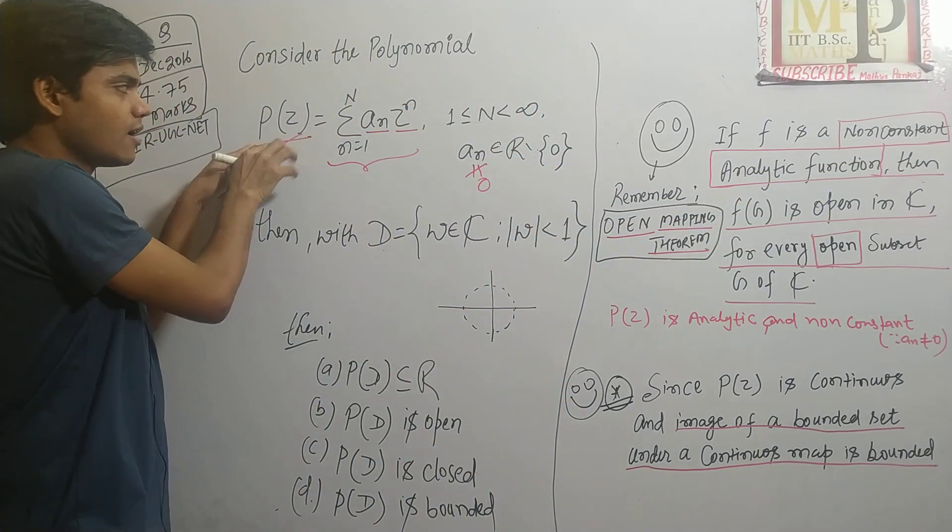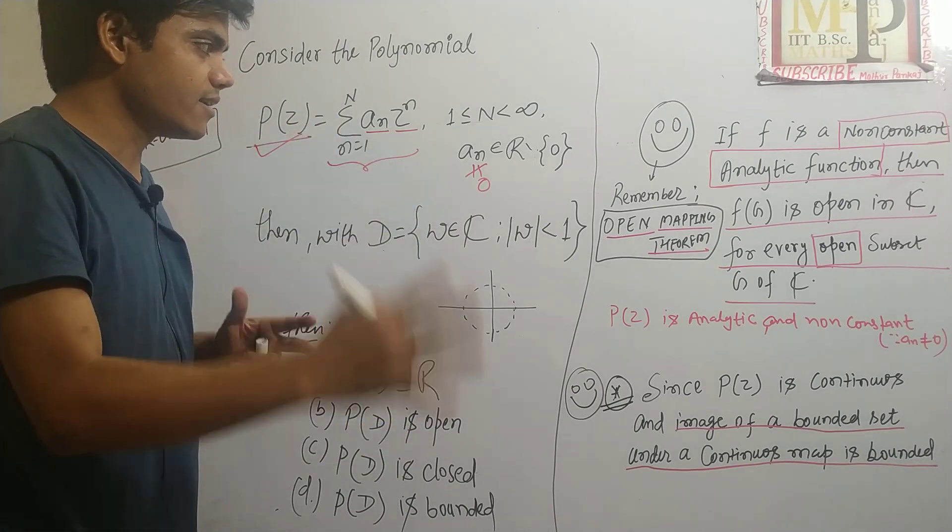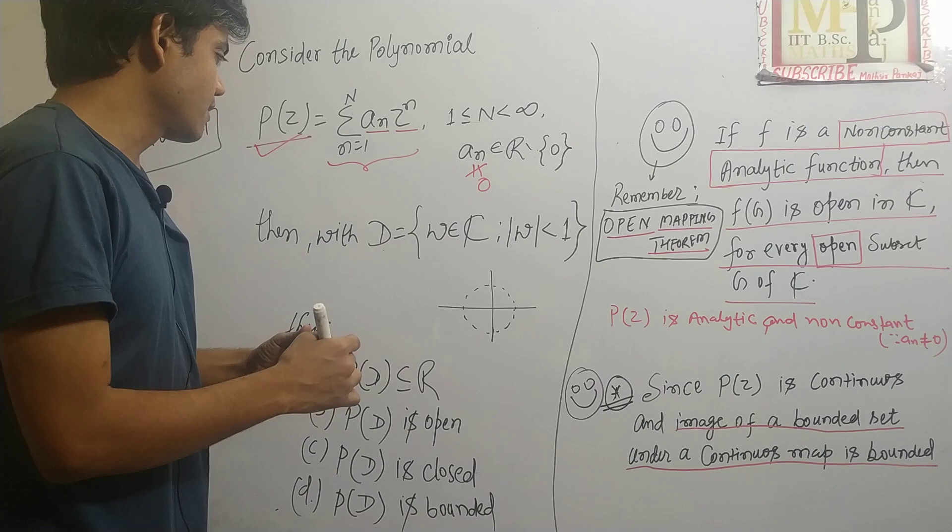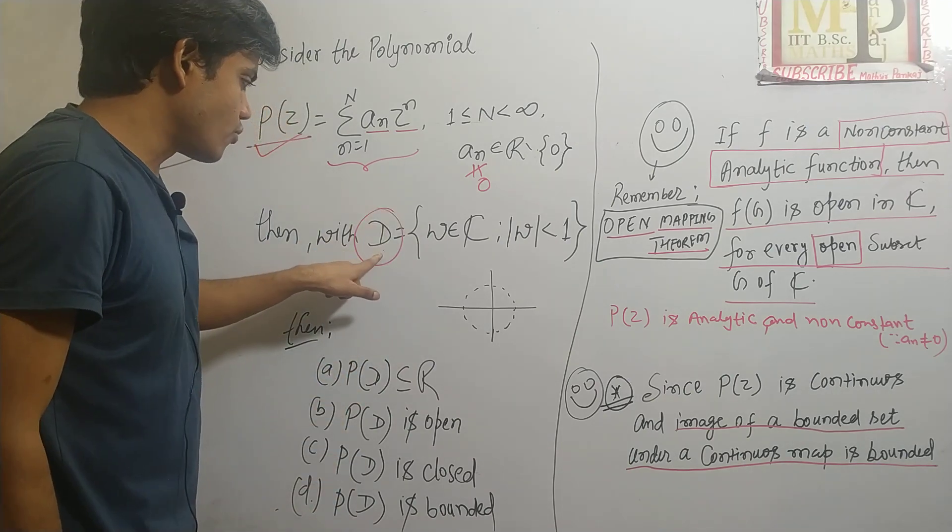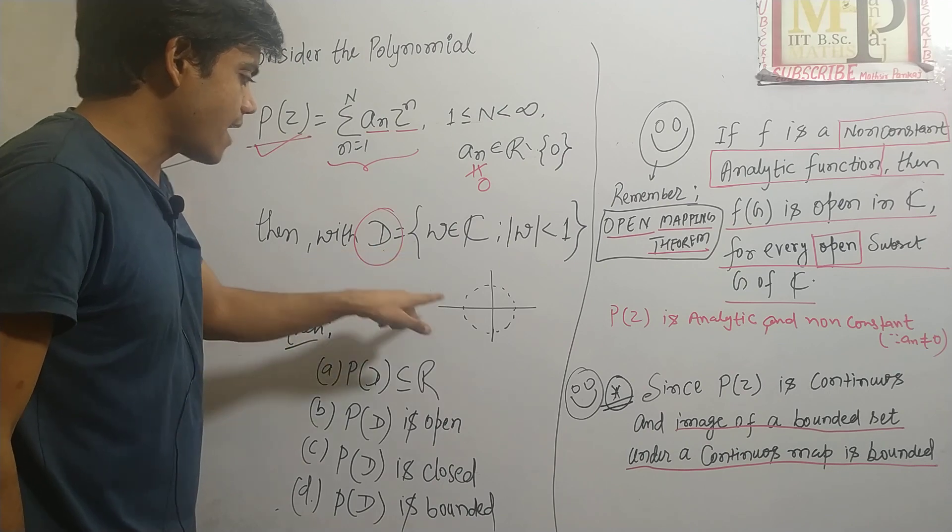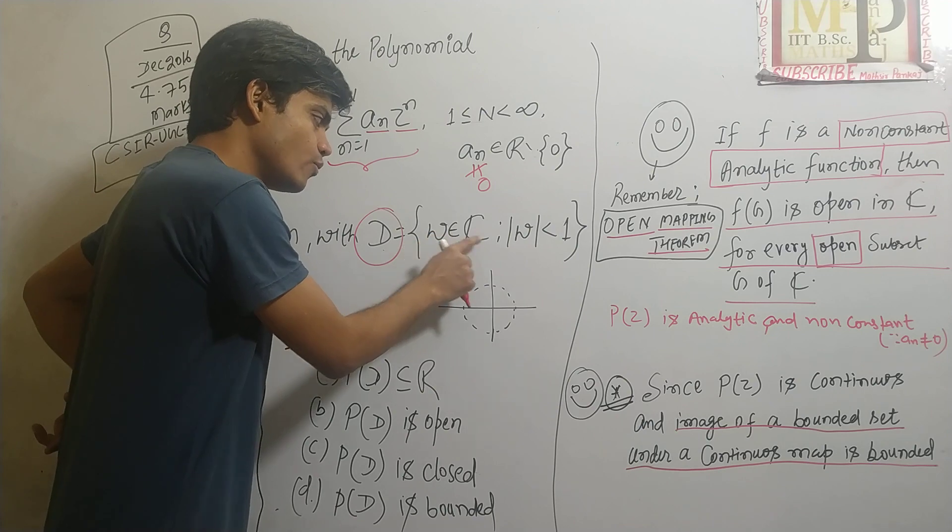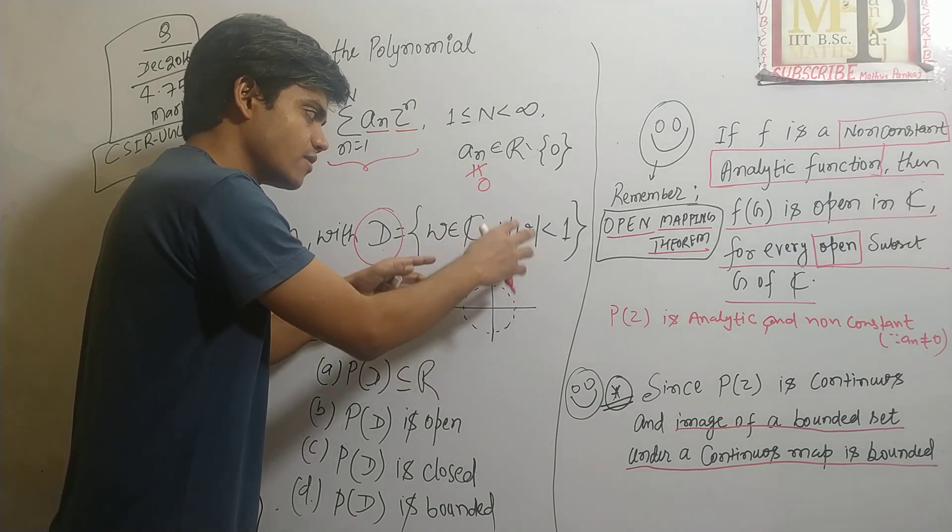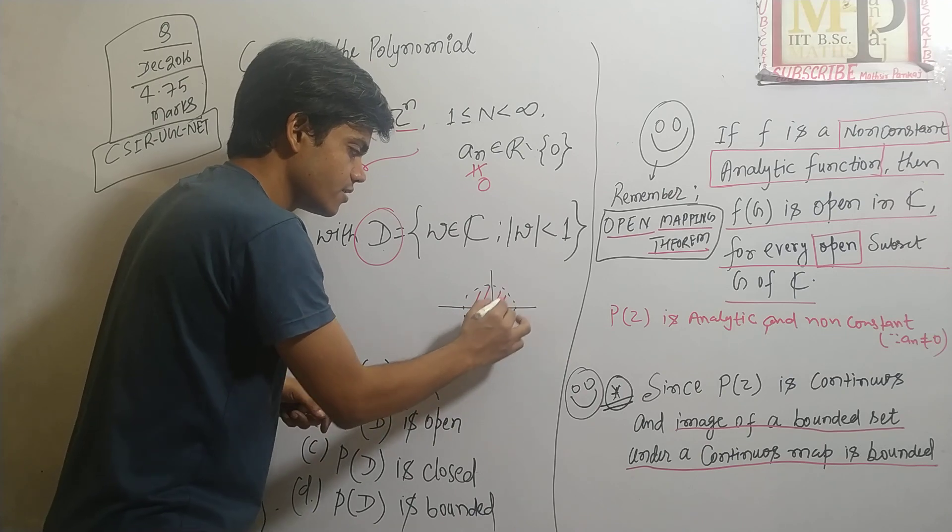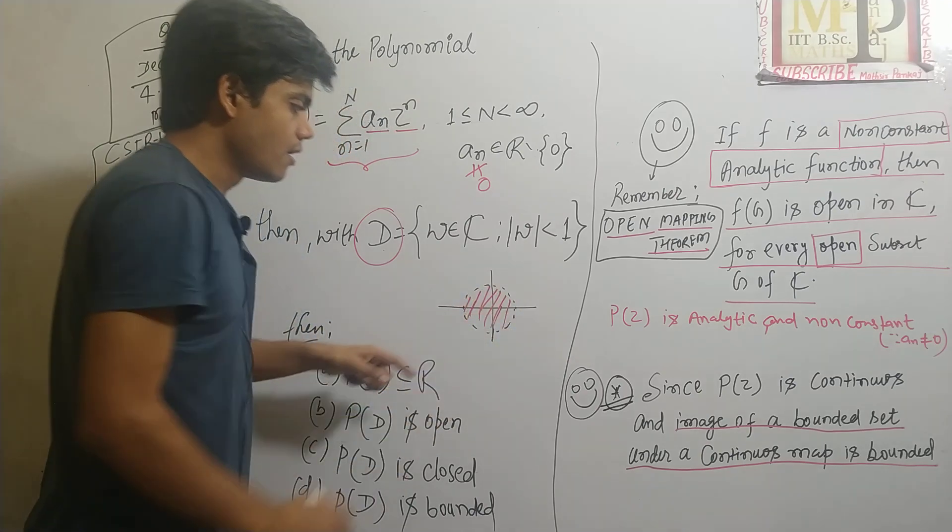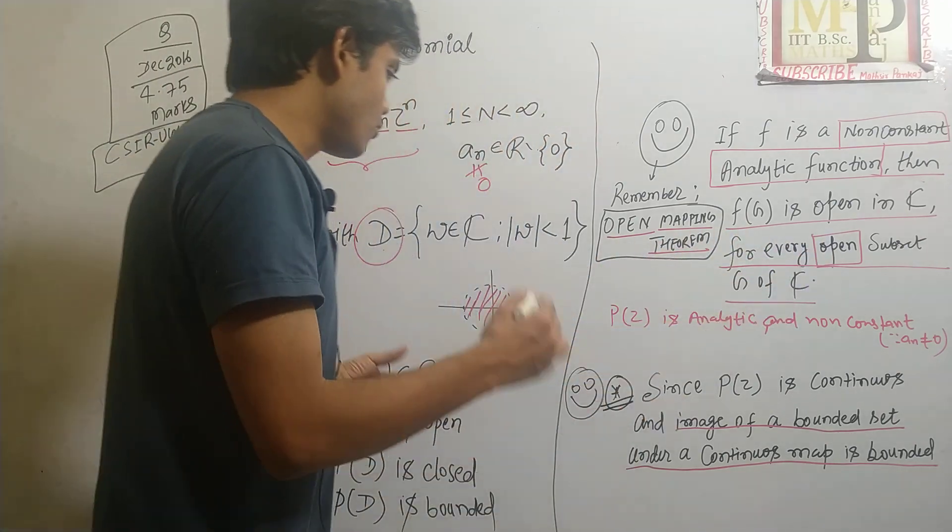So these two conditions: if your function is non-constant analytic, so yes, our function P(z) is non-constant analytic function. The second thing: Now D is given here. Your D is a unit circle without boundary because D is W belongs to C, all the complex numbers such that mod W is less than 1, means this interior part of this unit circle.